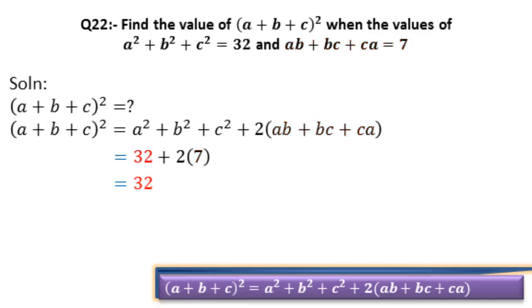Equal 32 comes as it is. Plus comes as it is. 2 is multiplied with 7, becomes 14. And now equal comes as it is. 46 is obtained by adding 32 and 14. Hence this is our final answer.